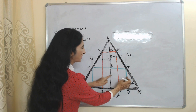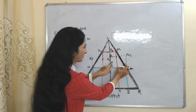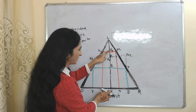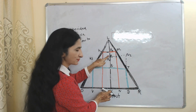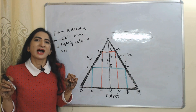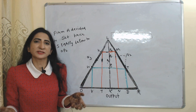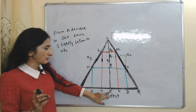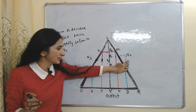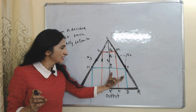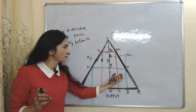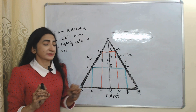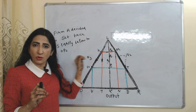Now firm A reduces its product price from xp2 to xp3. You can see profit of A has increased. Profit of A is now equal to xp3 and 2d — this part is called profit of A after reducing price from xp2 to xp3.